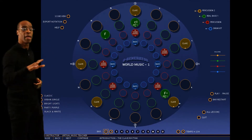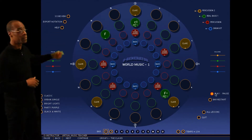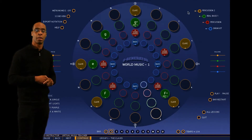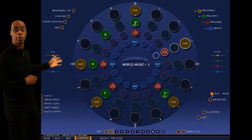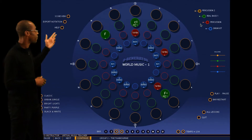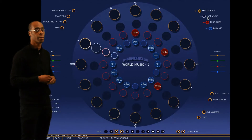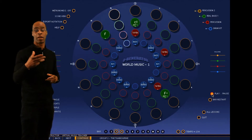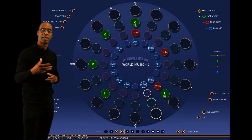Here we have the 3-2 and the students would be following the outside circle. Once they've got the rhythm, you click on the continue button and it will take you forward and move on to the next rhythm. In this case, it's the tambourines playing the 1-2-3. They would follow that rhythm and then you click continue to get them to play their parts at the same time.